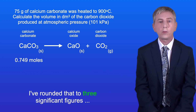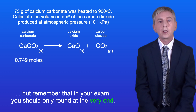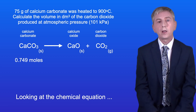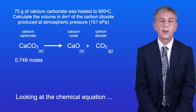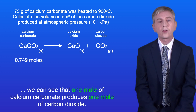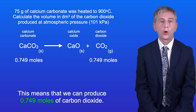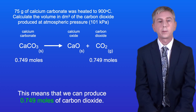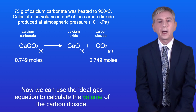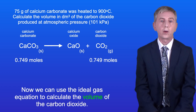I've rounded that to three significant figures, but remember that in your exam you should only round at the very end. Looking at the chemical equation we can see that one mole of calcium carbonate produces one mole of carbon dioxide. This means that we can produce 0.749 moles of carbon dioxide.